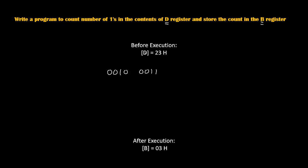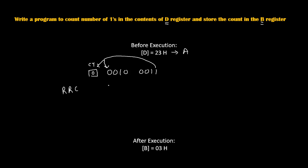Now we are going to achieve it. First, we will copy 23H from the D register into the accumulator, and then we will rotate the accumulator towards the right. There is no direct instruction to rotate the content of D, so first we copy it into the accumulator and then rotate the content right using the RRC instruction. RRC stands for rotate the accumulator right without carry. Let's say before execution our CY flag was 0. After the first rotation, the last bit gets shifted into the CY flag as well as into the first bit position, so the first bit will become 1.